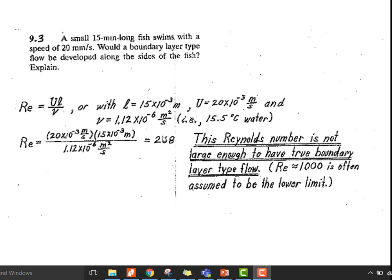This Reynolds number is not large enough to have true boundary layer type flow. Re = 1000 is often assumed to be the lower limit. The Reynolds number is 268, quite small, which means although the inertial effects are greater than the viscous effects—since the numerator is greater than denominator, 268 times—will this create boundary layer flow? No, because usually 100,000 Reynolds number or 1,000 Reynolds number is a minimum value, around that scale, exponential 3.